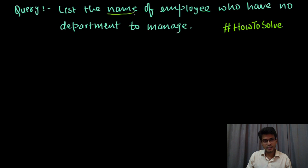So first of all it is asking to list down name and we have to see what are the relations which we will be looking at, and it is asking who have no department to manage. It means they are not managers. List down all the employee names who are not managers.